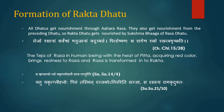Sushrut has mentioned that Rakta is also responsible for increase or decrease in other dhatus, because blood supplies nutrition to all the tissues, and if it is deficient it will lead to improper nutrition to other tissues, ischemia and hypoxia, ultimately leading to tissue death. All dhatus get nourishment through Ahar Ras and also from the preceding dhatu, so Rakta Dhatu gets nourished from the sukshma bhag of Rasa Dhatu. The Tej of Rasa in human beings, with the heat of Pith, acquiring red colour, transforms Rasa into Rakta. Sushrut has also mentioned that Rasa Dhatu, which is predominant in water content, after reaching the liver and spleen is converted into Rakta. The Pith which resides in the liver and spleen performs the colouration of Rasa into Rakta, known as Ranjak Agni.